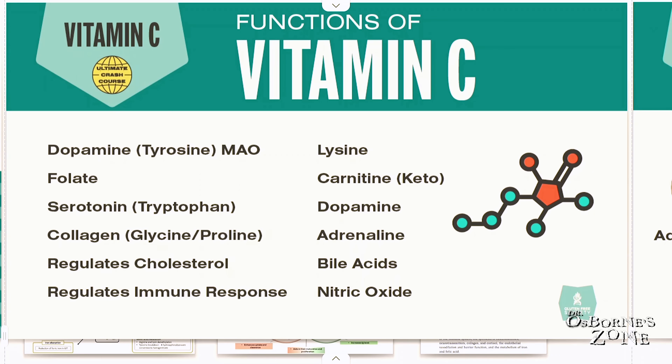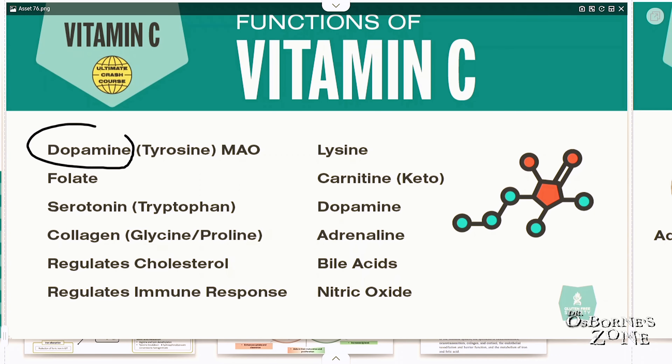It plays a role in the formation of dopamine through the metabolism of the amino acid tyrosine. It plays a role in folate metabolism — folate is a B vitamin, vitamin B9 specifically. It plays a role in how we produce the neurochemical serotonin, which regulates pain and happiness. It plays a role in collagen formation — most people know vitamin C by this role, and we'll dive more deeply into that shortly.